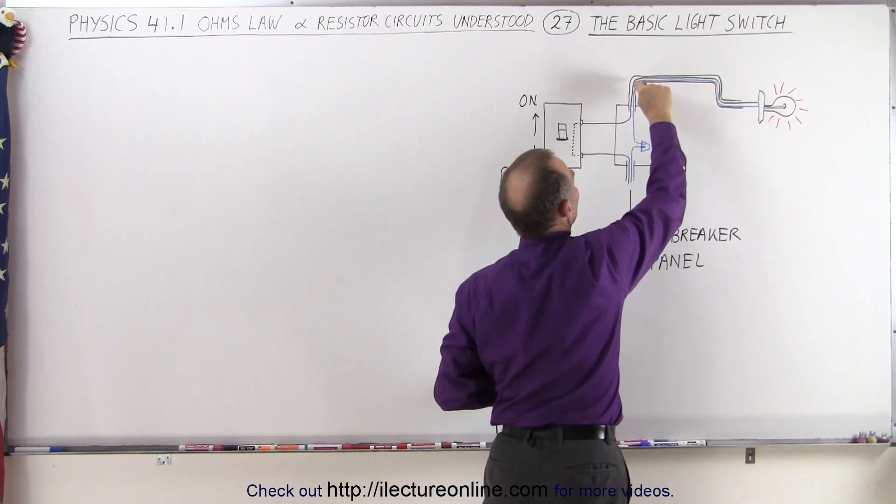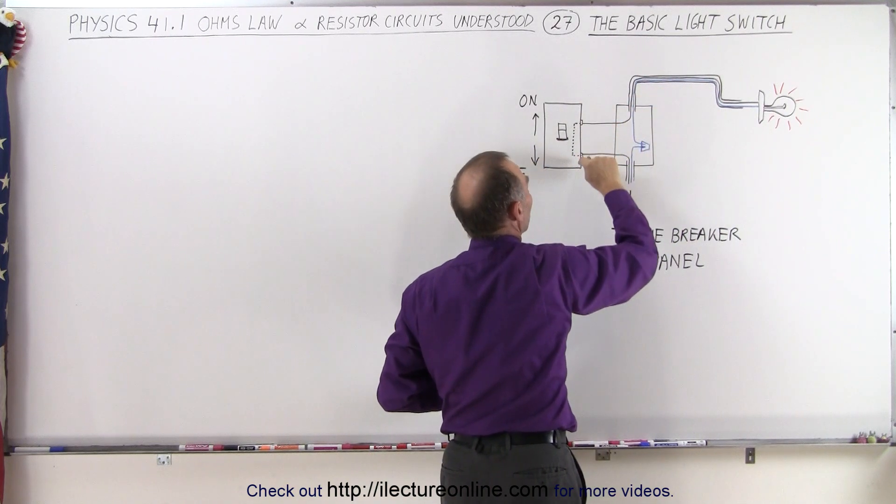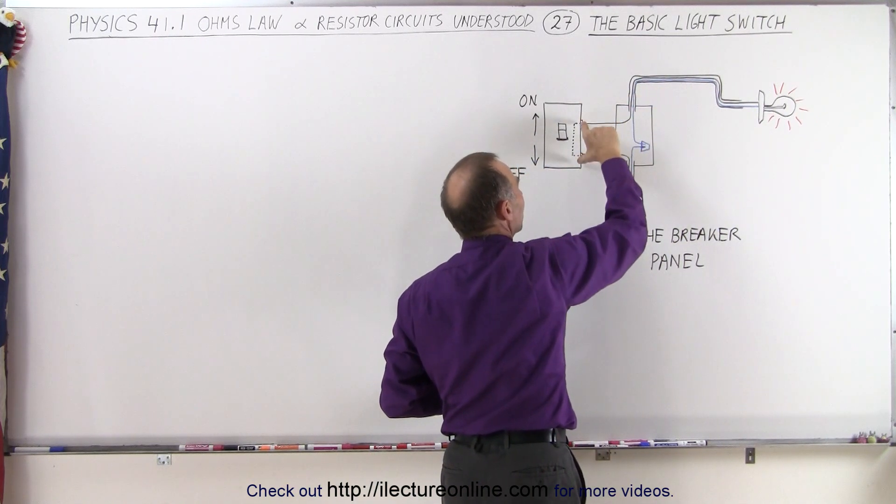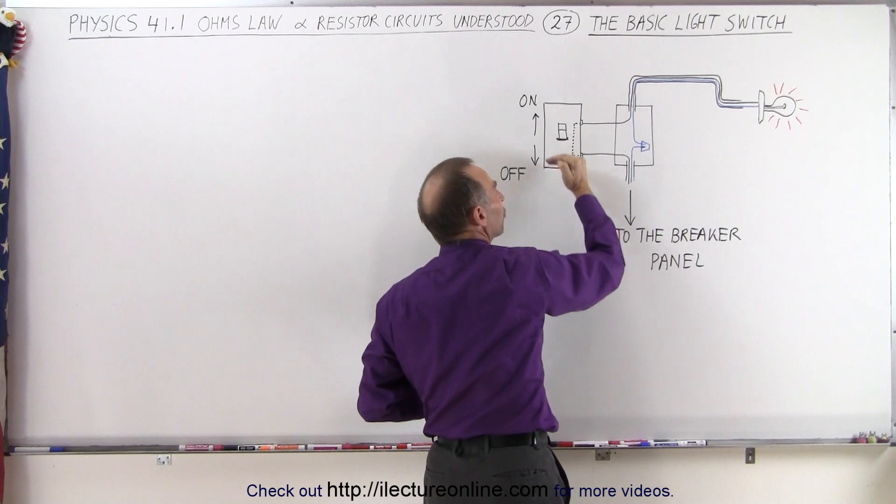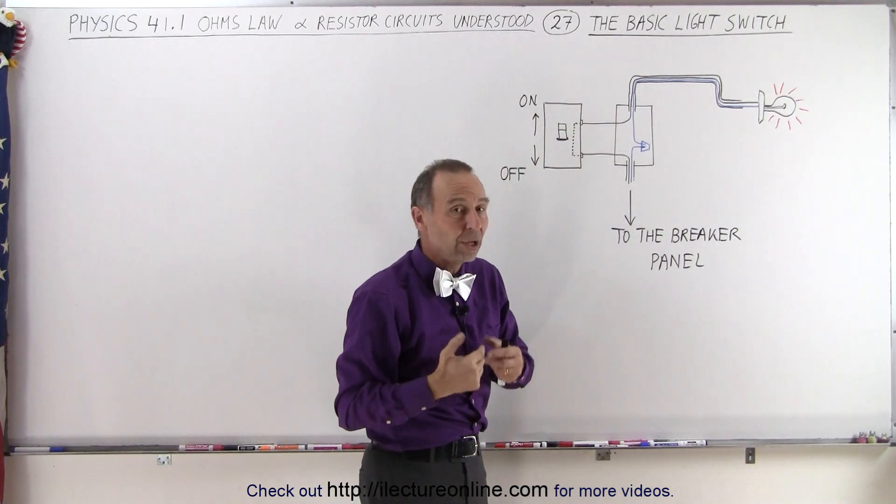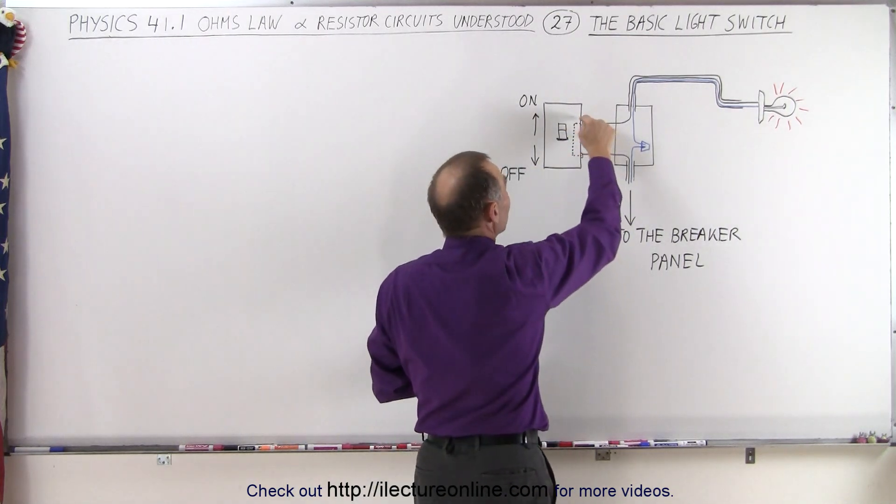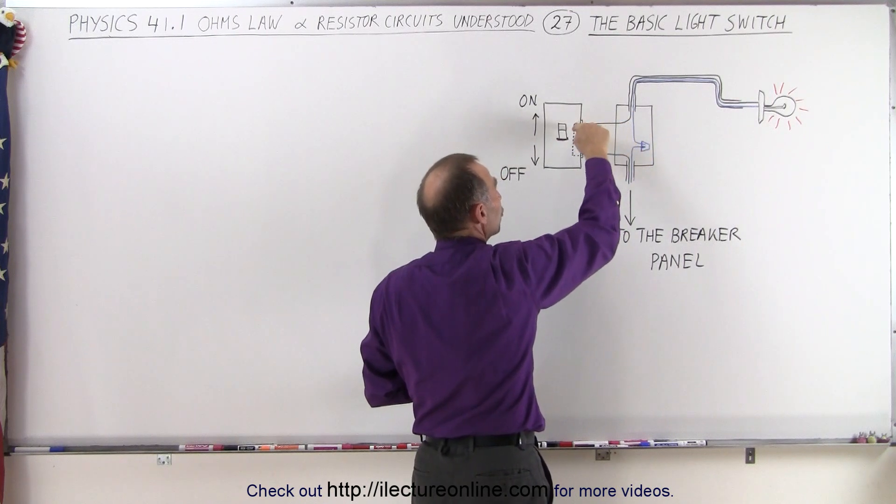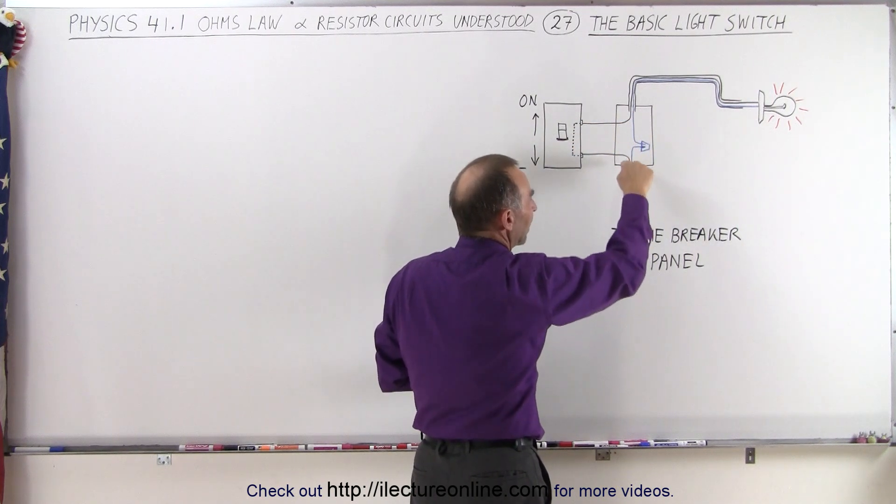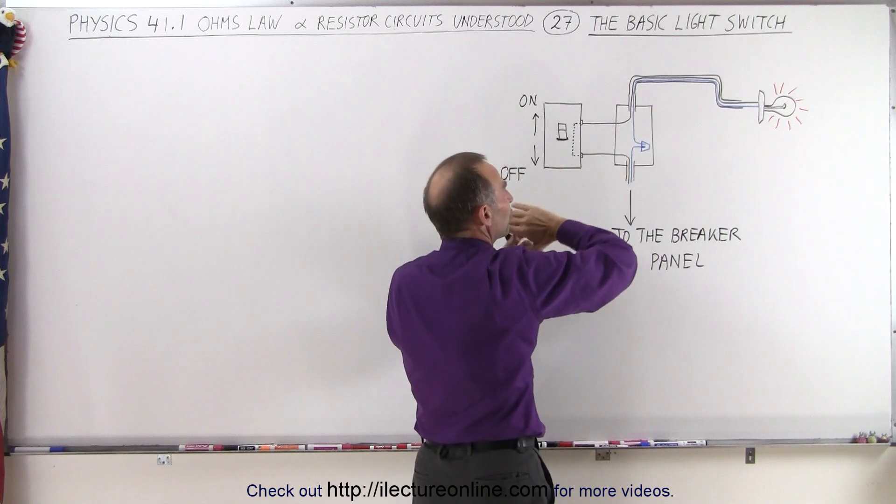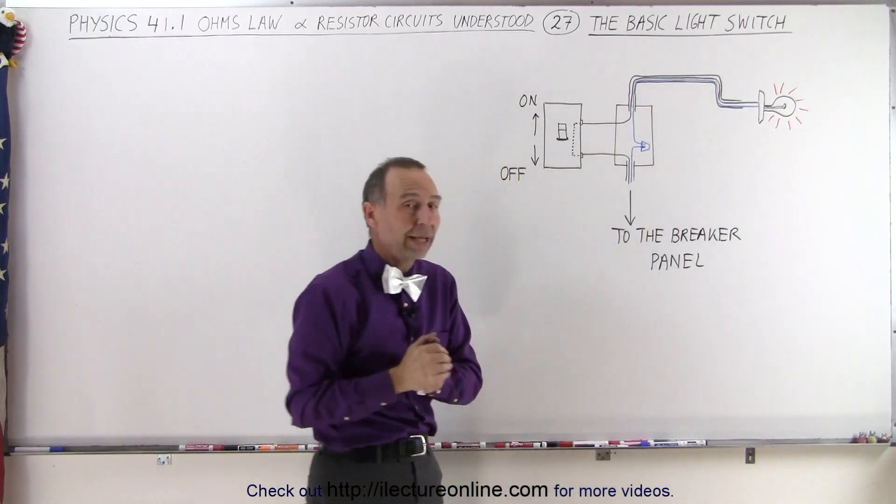The other wire coming back from the device is routed to the switch. There's two points on the switch here that only make contact when the switch is in the on position. When the switch is in the off position, there's no contact here and therefore there's no current that can flow to the black wire, so no light bulb or device will light up.